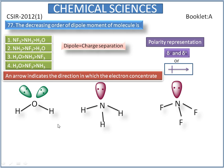In the water molecule, oxygen is the electronegative element and hydrogen is the electropositive element. So the direction of the dipole moves towards oxygen. In the orbital, the electrons are concentrated more towards oxygen, so the direction of the dipole is also in the same direction.